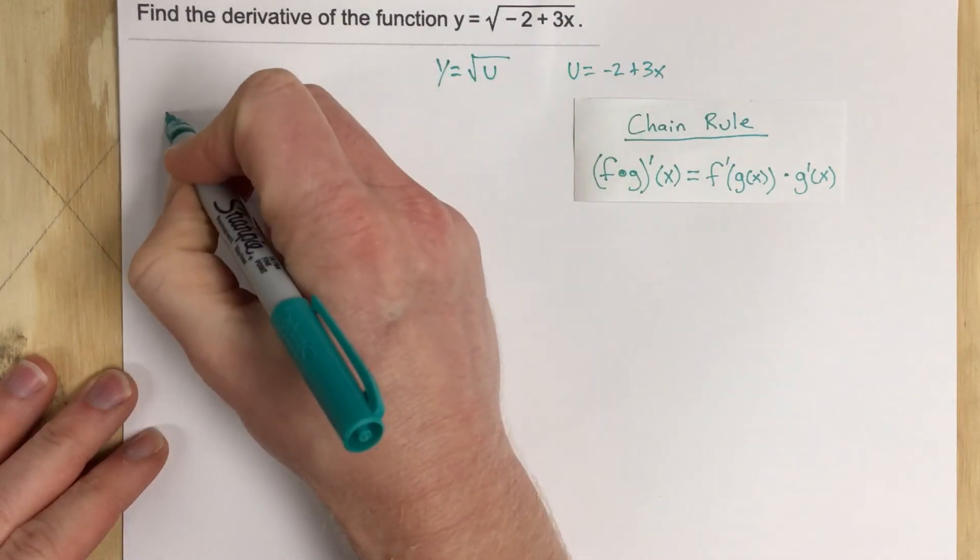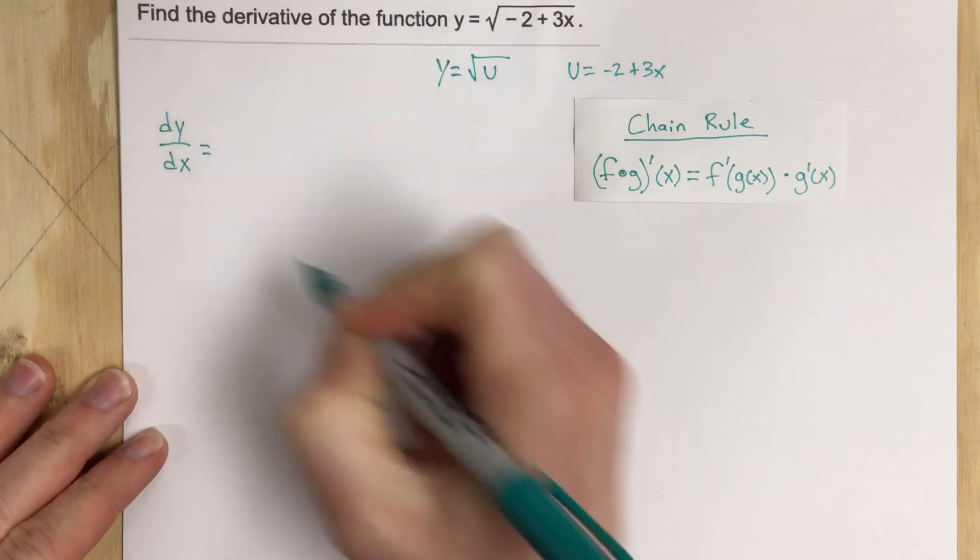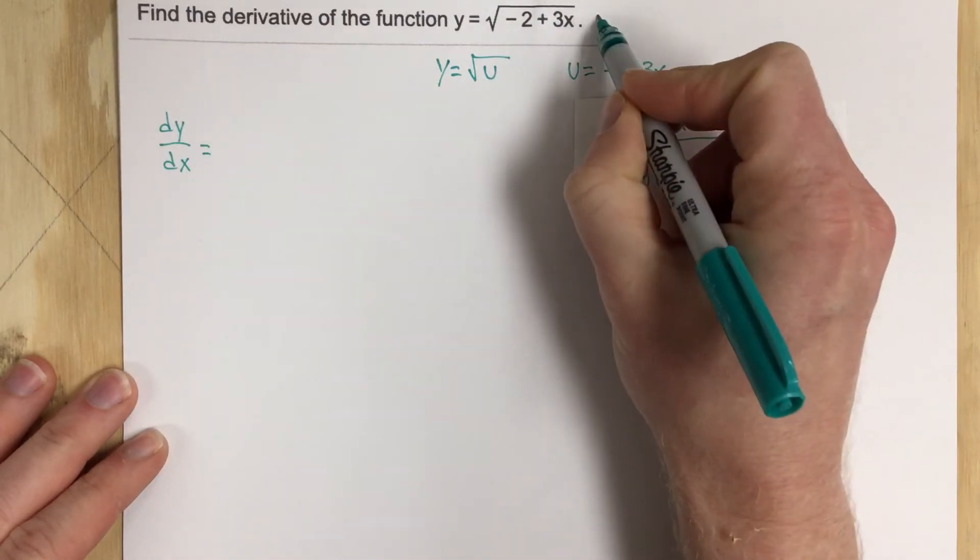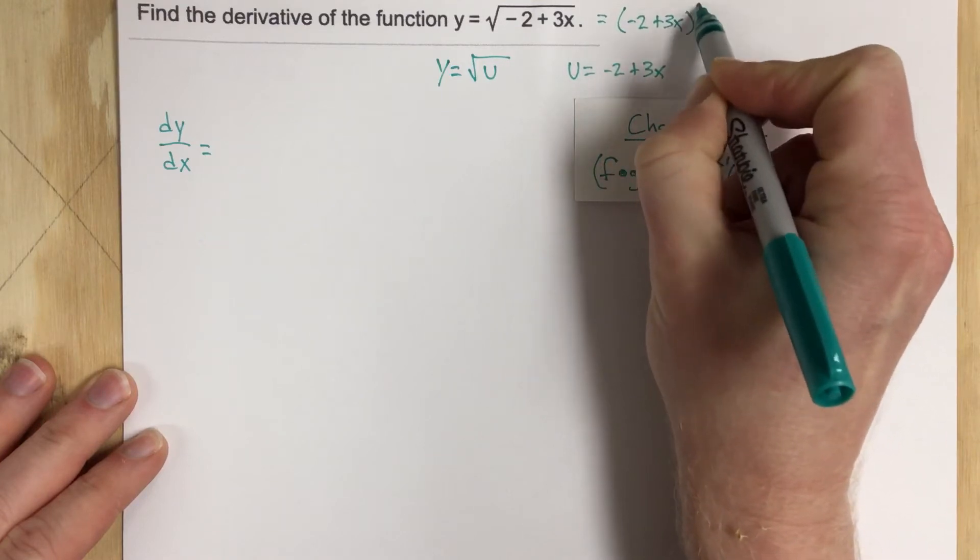So we're going to start with dy over dx. Before we start this, I'm going to write this as equal to negative 2 plus 3x to the 1 half power.